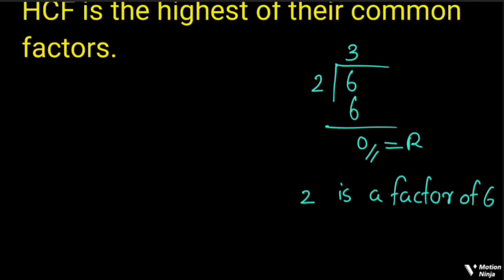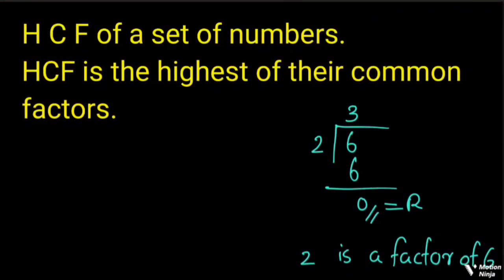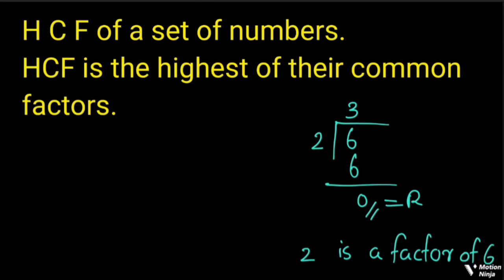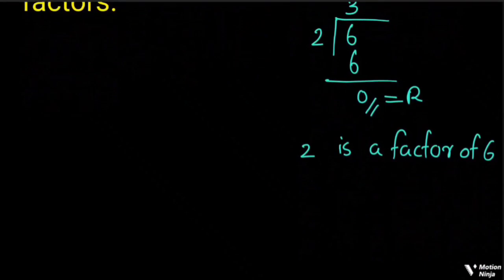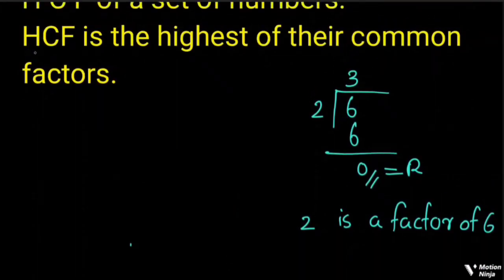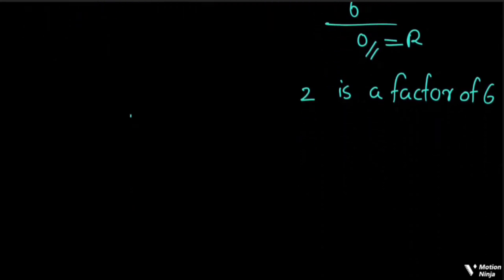That is the number. If you have the highest of common factors, that is what you call HCF. We will have methods to show the easy way to do this. This technique is to find the HCF by listing the factors. First technique is by listing the factors.